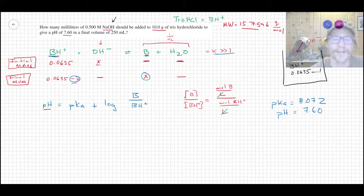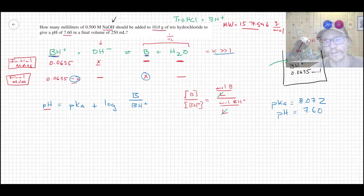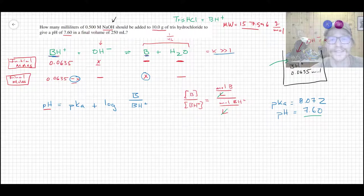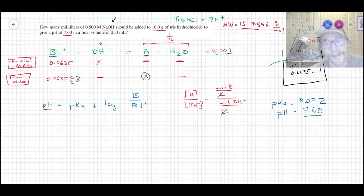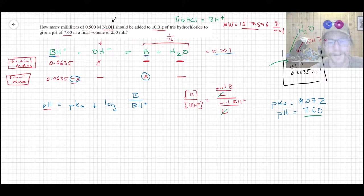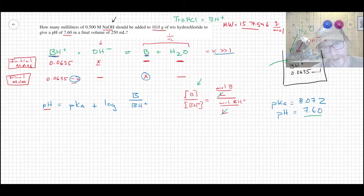And why is that? Well, if you look at the expression here, if it's concentration of B over concentration of BH+, what that really is implying is that it's moles of B over liters of solution divided by moles of BH+ over liters of solution, the same solution. Those go away and really what you're left with is the ratio of moles. The volume doesn't matter.